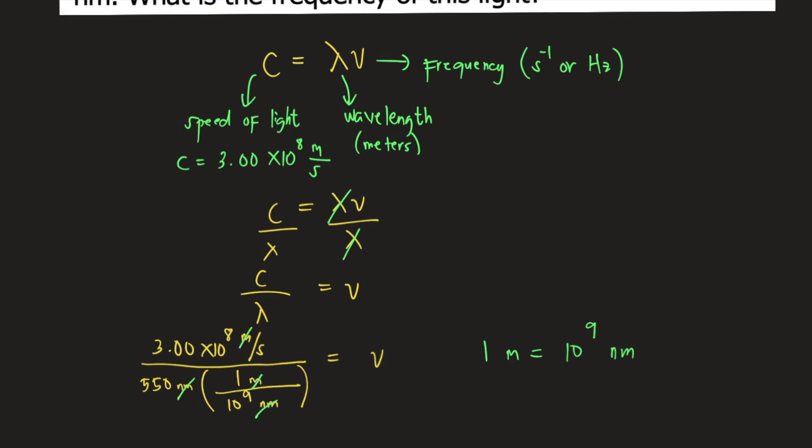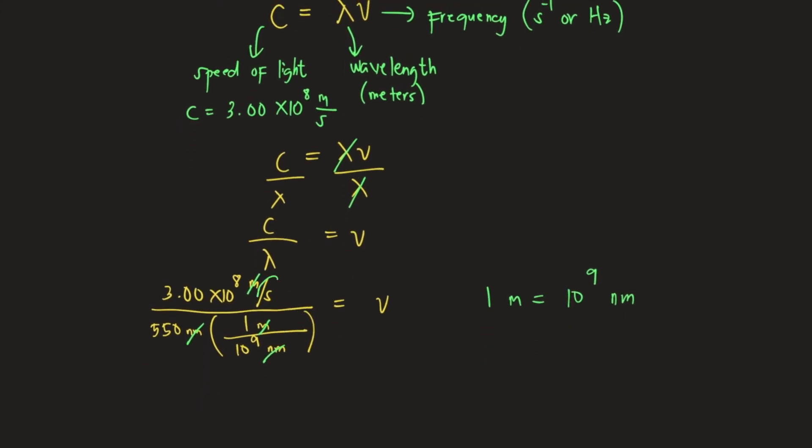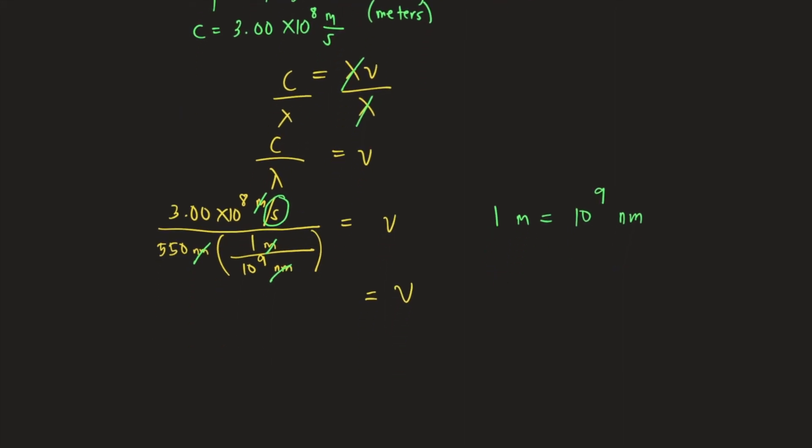Meters would cancel, and the remaining unit would be per second or second raised to negative 1. So if we solve for the frequency, this is equal to 5.45 times 10 raised to 14 per second.